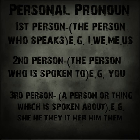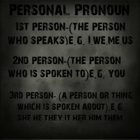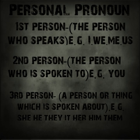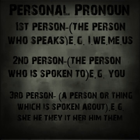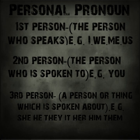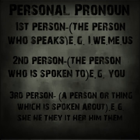There are three types of personal pronoun. First person — the person who speaks: I, we, me, us. Second person — the person who is spoken to: you. Third person — a person or thing which is spoken about, matlab jiske baare mein bola ja raha hai: she, he, they, her, him, and more.